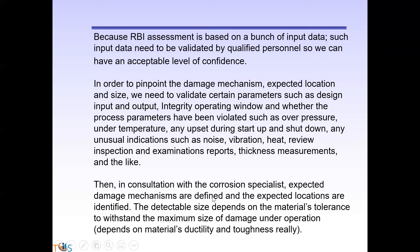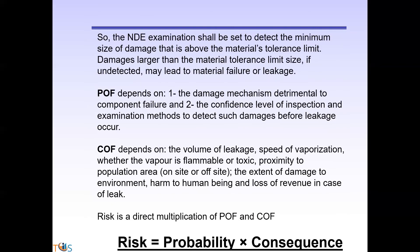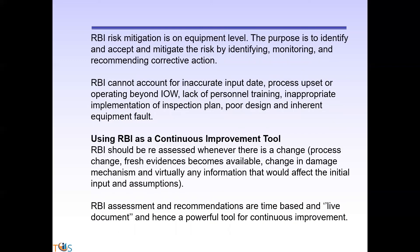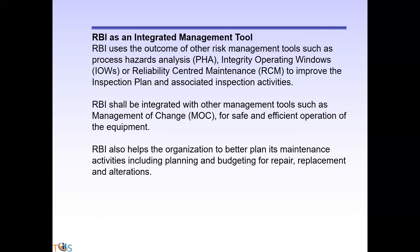Probability of Failure depends on the damage mechanism and the confidence level of inspection. Consequence of Failure depends on the volume of leakage, the speed of vaporization, and how much damage it can cause. From these you get the risk. You should know what risk means and what the RBI benefits are. The reassessment we discussed can be used as a continuous improvement tool. It's a live document that needs to be periodically reassessed — normally a maximum of 10 years. You can also use it as an integrated management tool, complementing other tools like Process Hazard Analysis or Reliability-Centered Maintenance; RBI is not a replacement for them.